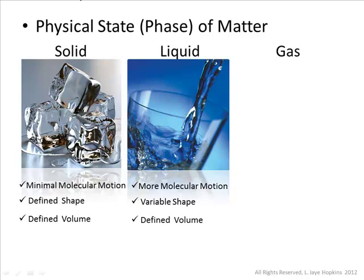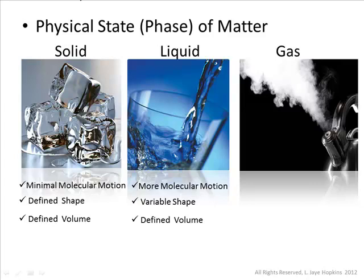What you can't change in a liquid, however, is its volume. For instance, if I have a gallon of milk, that milk can be poured into glasses and change shape, but I'll need a gallon of space to hold all the milk. So liquids still have a defined volume — you can change their shape, but you can't change the amount of space they take up. Let's compare this to our final common physical state: the gas physical state.